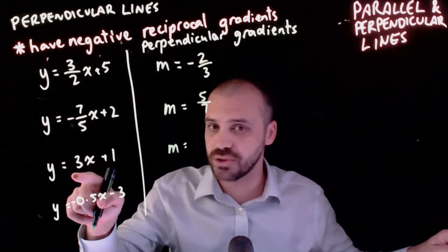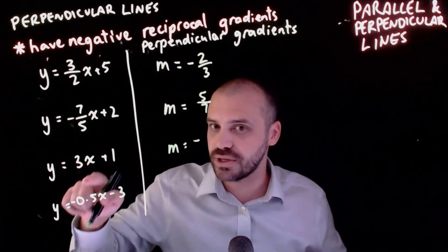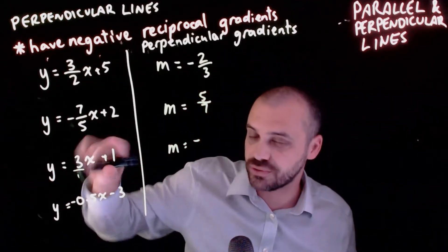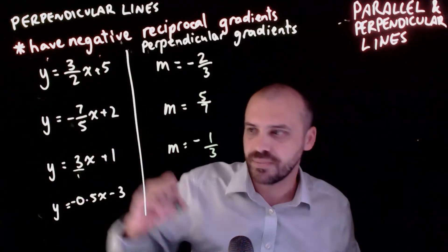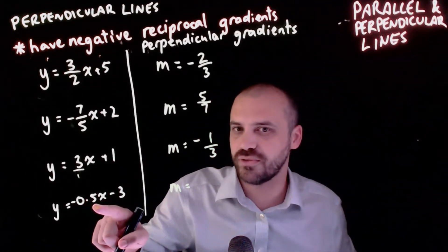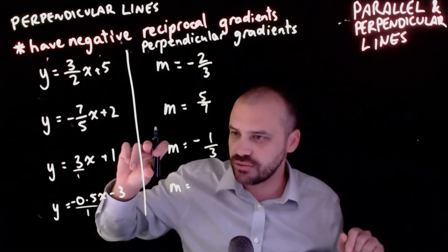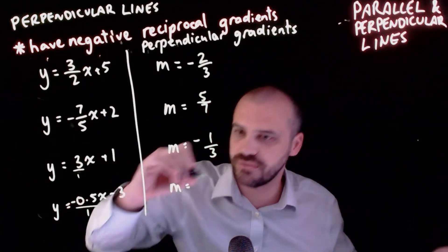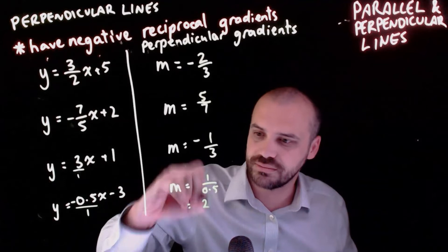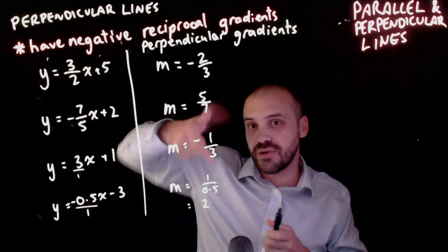This next one is positive, so the perpendicular gradient will be negative. The reciprocal of 3 - well, 3 is really 3/1 in disguise, so the reciprocal of 3/1 is 1/3, giving negative 1/3. Finally, for negative 0.5 - that's negative 0.5/1 in disguise - so we write positive 1/0.5, and 1 divided by 0.5 is 2. That's how you find perpendicular gradients - it's called the negative reciprocal.